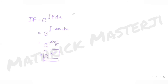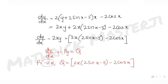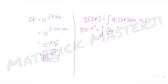With the integrating factor e^(−x²), the solution of the differential equation is: y × IF = ∫Q × IF dx + C. So y·e^(−x²) = ∫[2x(2sin(x) − 5) − 2cos(x)] · e^(−x²) dx + C.